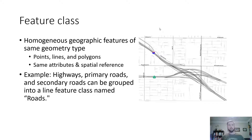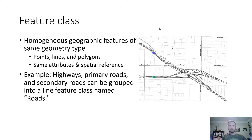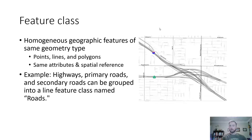Feature classes are homogeneous geographic features of the same geometry type — points, lines, or polygons. They have the same attribute schema or field headers. For example, if it's cities: name of city, population, county where the city is located. They also share the same spatial reference. For roads, highways, primary roads, and secondary roads could all be lumped into one line feature class called Roads, even though they represent different types of roads.